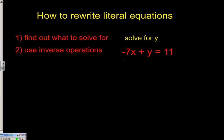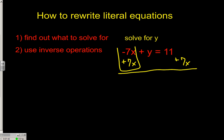How can we get the negative 7x away from the y? Just add it. And then we're left with 11 plus 7x.